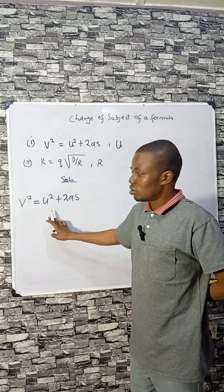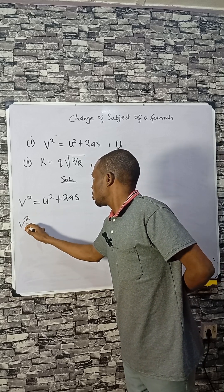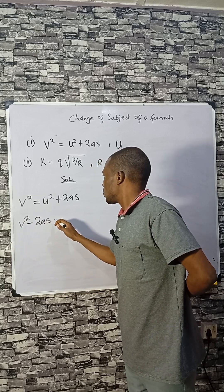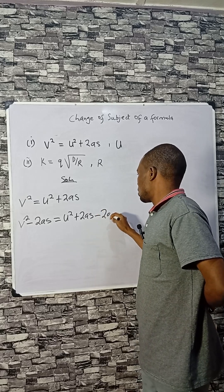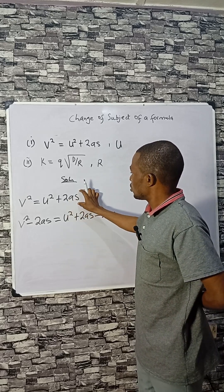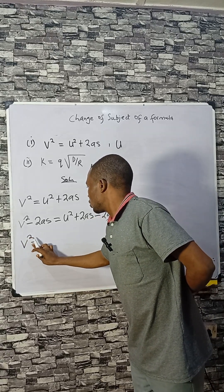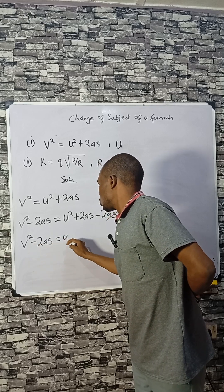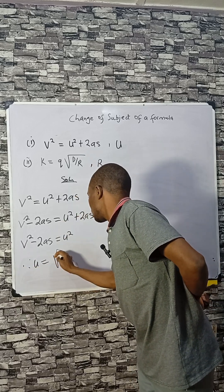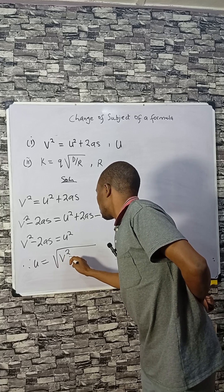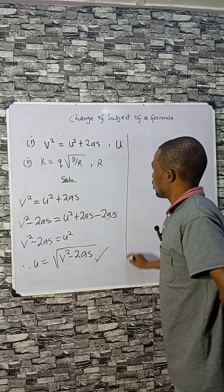All you need to do is subtract 2as from both sides so that u squared can stand alone. That would be v squared minus 2as equals u squared plus 2as minus 2as. Because we are subtracting 2as from both sides, this cancels out. So we have v squared minus 2as equals u squared. We have to make u, not u squared, so therefore u equals the square root of v squared minus 2as. This is the answer.